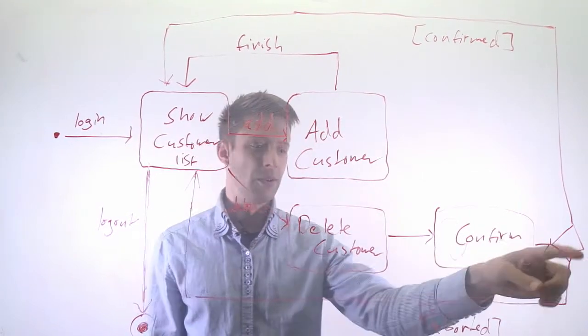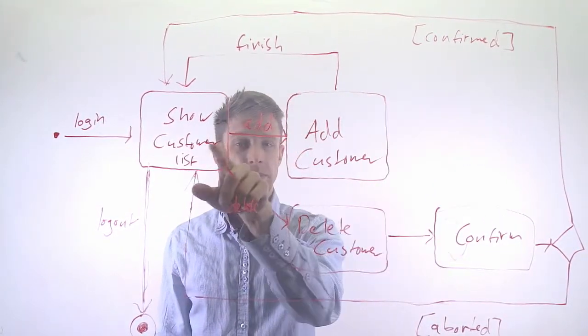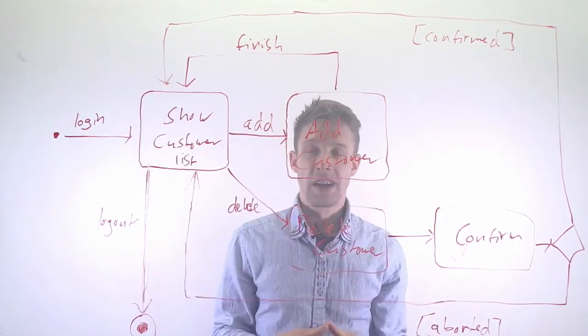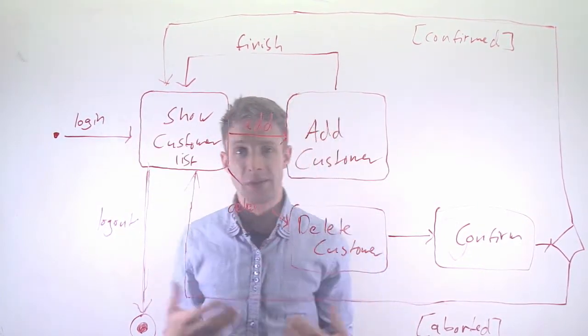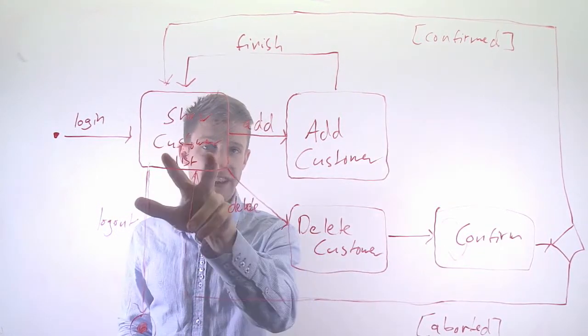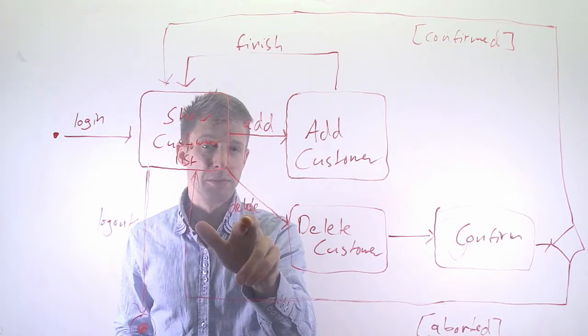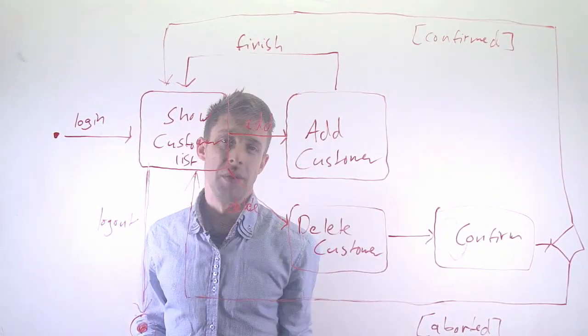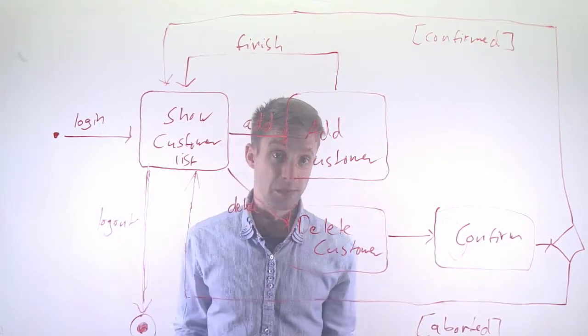If you're in the confirm step and you actually confirm, then there should be an additional customer in the list, and you should end up in this state. You can do more complex things, you can do more integration system tests by actually going through several states. So if you're in the customer list and you press delete on one customer and you confirm, then you should end up back in this state and the customer should be deleted.